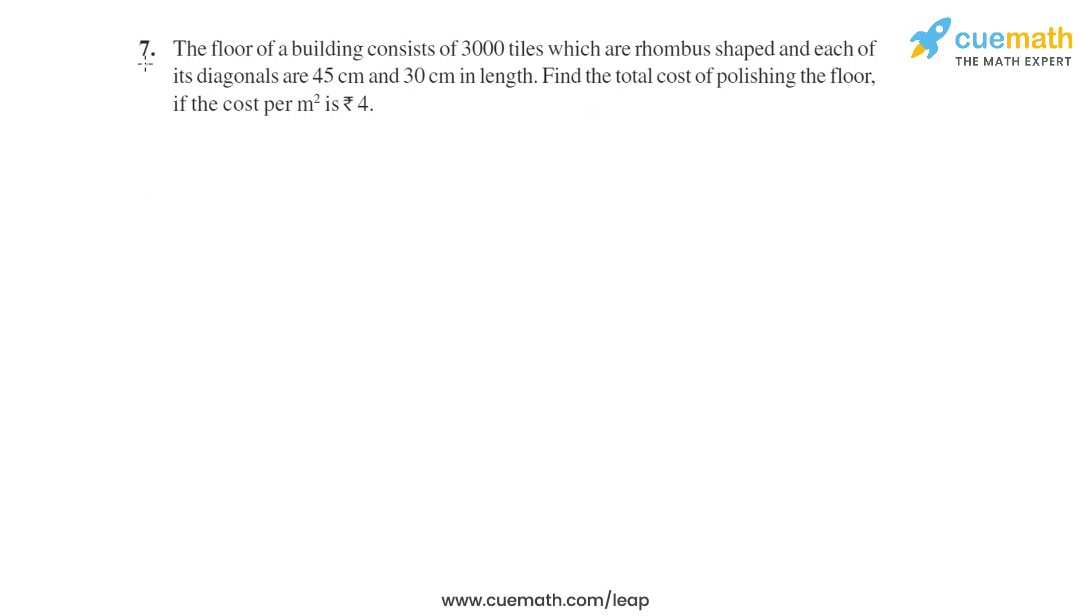In the seventh question, it is given the floor of a building consists of 3000 tiles which are rhombus shaped, and each of its diagonals are 45 cm and 30 cm in length. The diagonals of those rhombus shaped tiles are 45 cm and 30 cm, and there are 3000 such tiles on the floor.